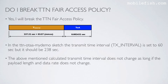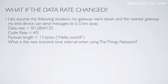The calculated transmit time interval does not change as long as the payload length and data rate do not change. Now let's assume the following situation: my gateway went down and the nearest gateway my end device can send messages to is 5 kilometers away. So the data rate changes to spreading factor 12, bandwidth 125 kHz.